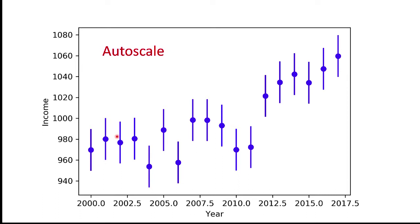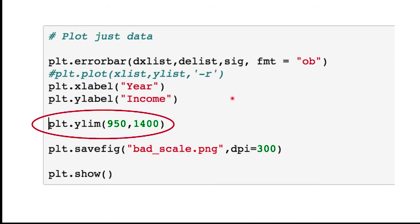This is appropriate if you want to look at your data in the most detail. However, you can override the auto-scaling, and if you're plotting by hand you have to decide the scale yourself. In Python, you use the x-lim or y-lim commands to set the lowest and highest value of the X and Y axes respectively.